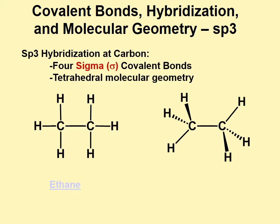For carbon atoms, sp3 hybridization is always associated with a tetrahedral molecular geometry. The structure shown is ethane. A dashed bond represents a hydrogen going backwards behind the screen. The wedge-shaped bond represents a hydrogen coming forward out of the screen. Bonds shown as lines are in the plane of the screen. This helps us represent a tetrahedral carbon in three dimensions on a two-dimensional screen. So sp3 hybridization for carbon is associated with four sigma covalent bonds and tetrahedral molecular geometry.